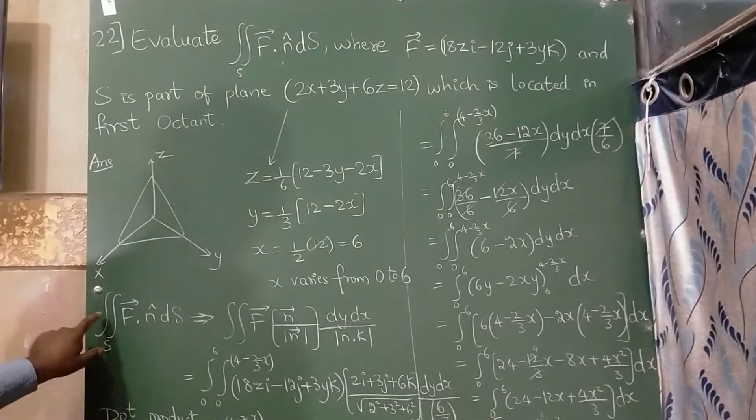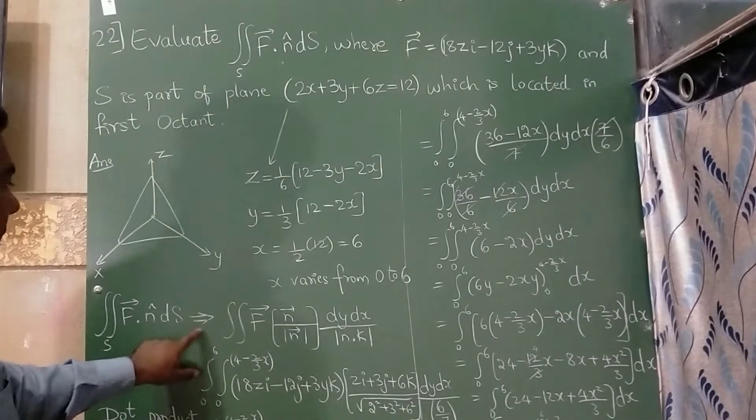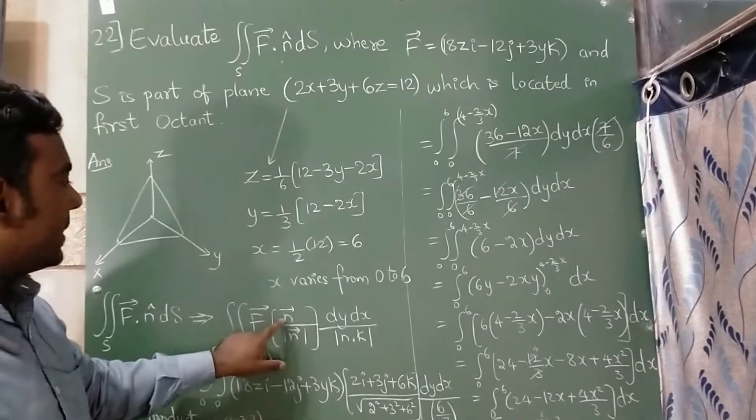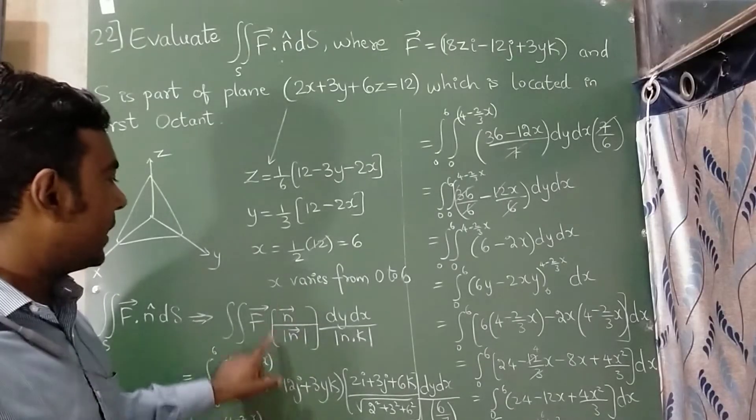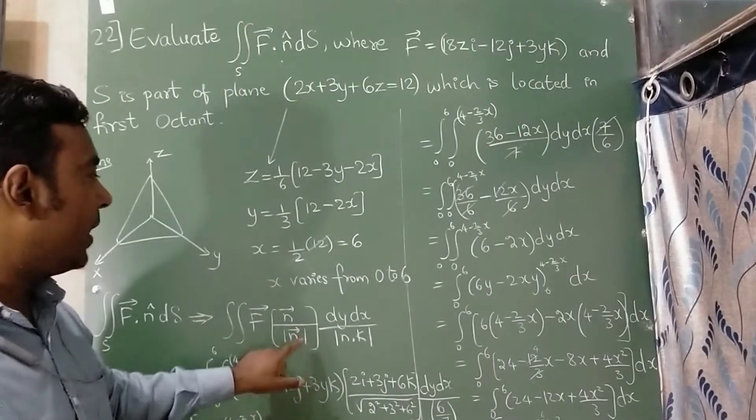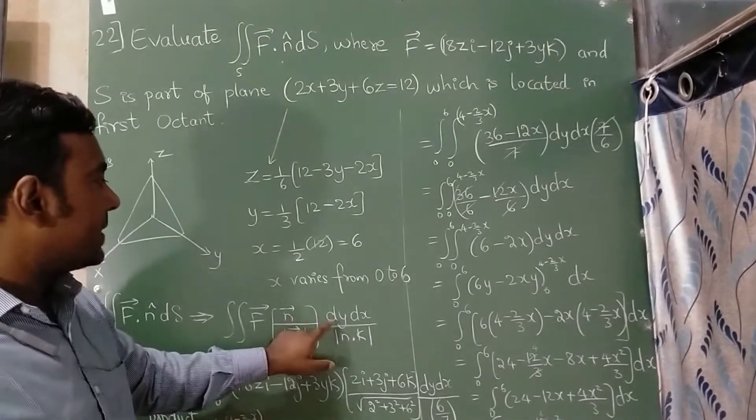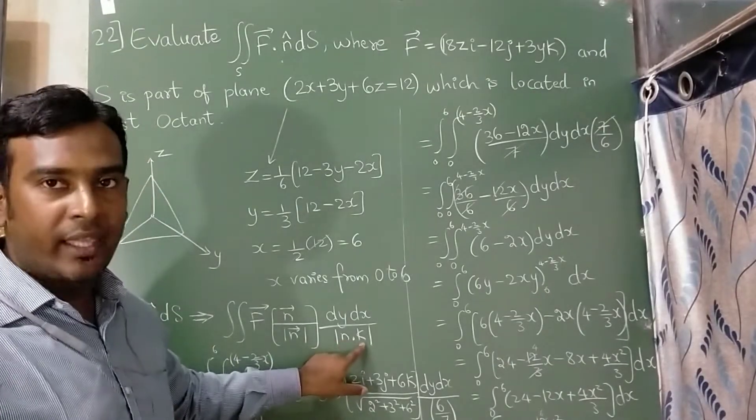Now given question is double integration of vector F dot n cap dS. So this can be written as double integration of vector F dot n vector divided by modulus of n. You can also tell that this is a unit vector formula from the class 12.